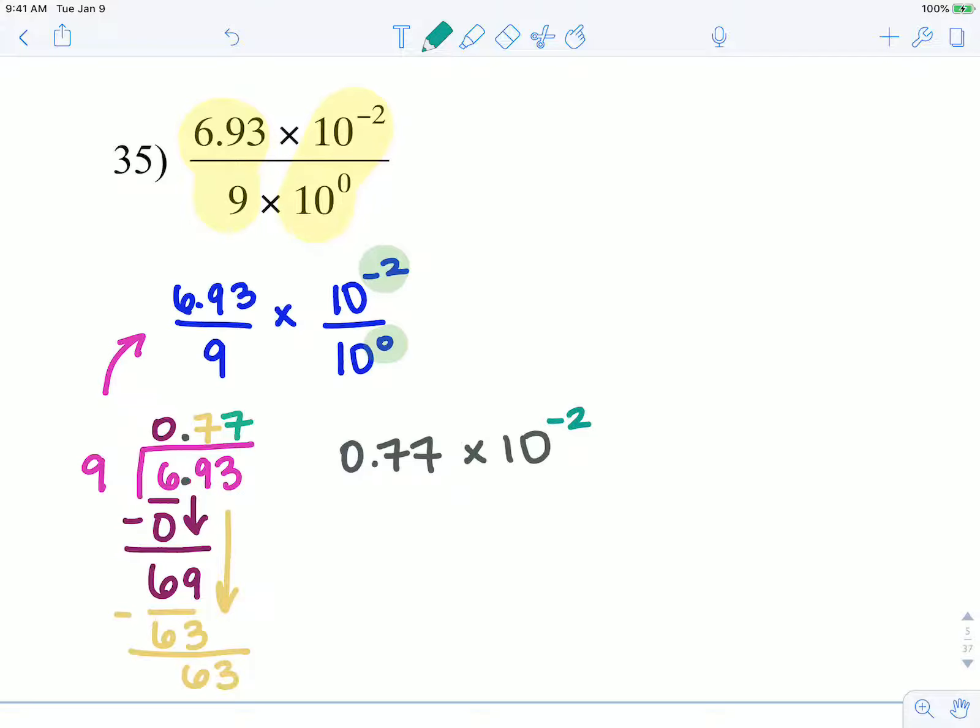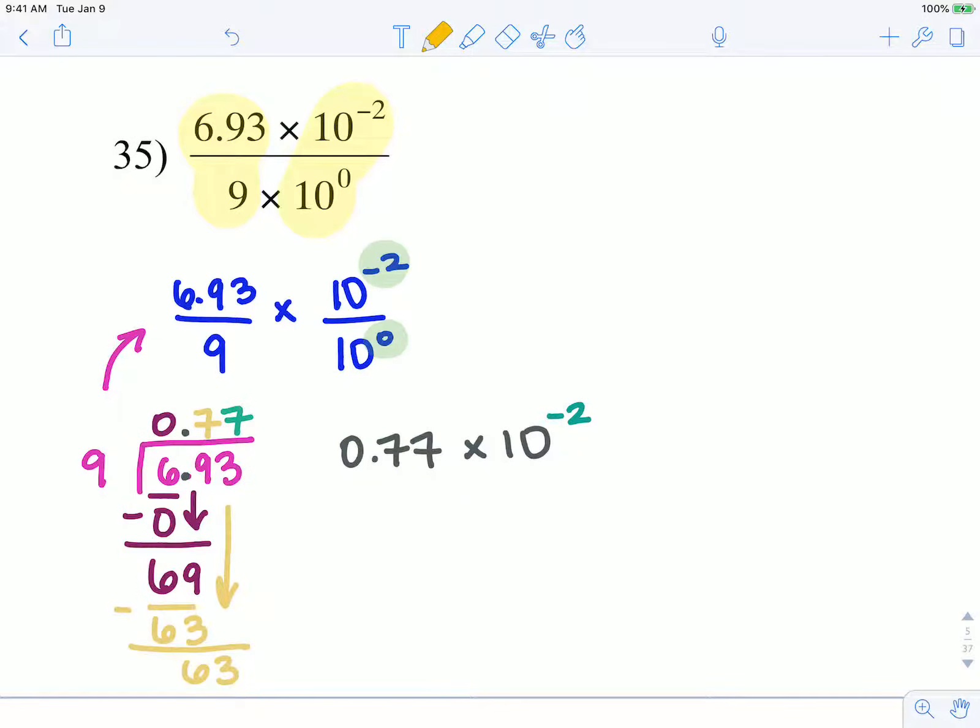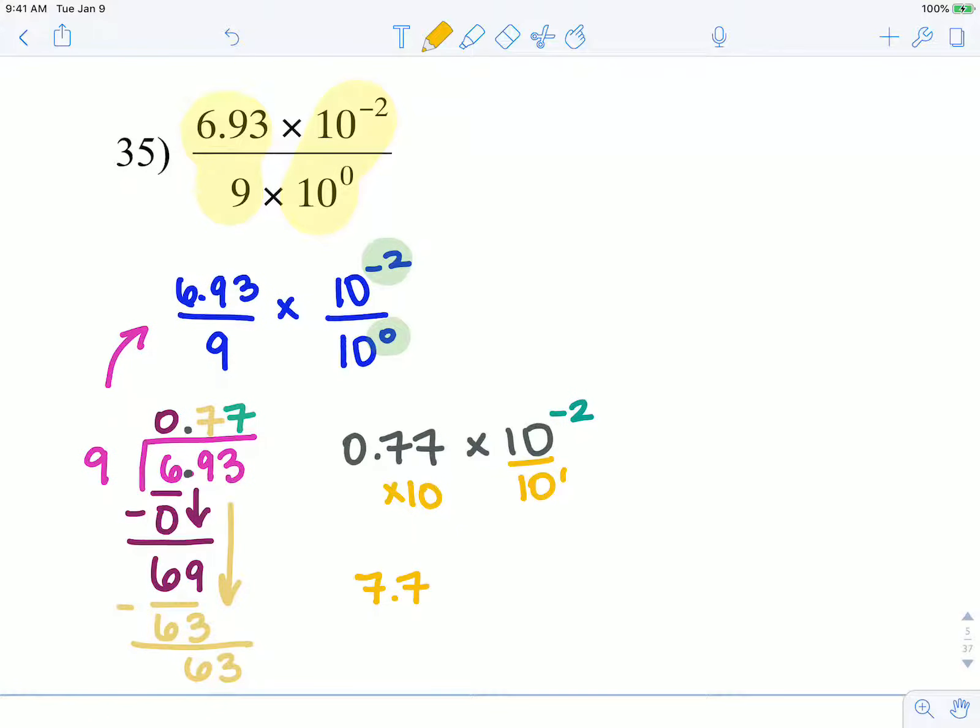Now this would be good as our final answer except this number needs to be between 1 and 10. So what we're going to do in order to make that between 1 and 10, I'm going to multiply by 10 because then that makes this 7.7. But in order to not change the quantity value, I'm going to divide by 10 at the same time, so then I'll subtract those exponents to make 10 to the negative 3 power.